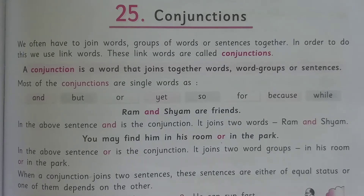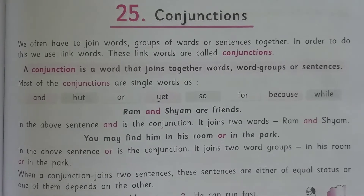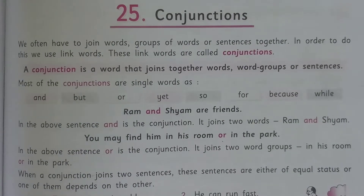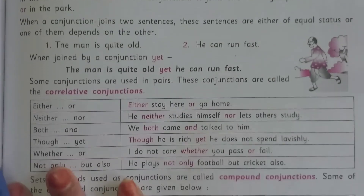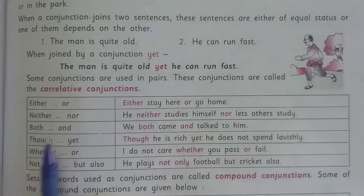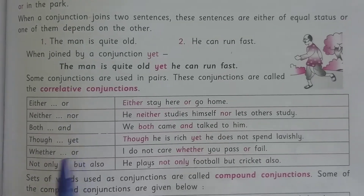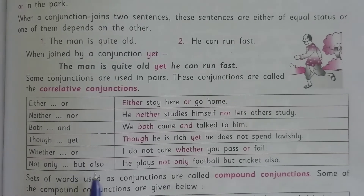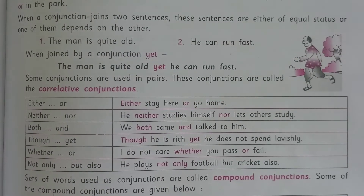This type of conjunction is the most popular category. They join words, phrases, or clauses of equal grammatical rank or independent statements. Some conjunctions are used in pairs, and these conjunctions are called correlative conjunctions. For example: either/or, neither/nor, both/and, though/yet, whether/or, not only/but also.